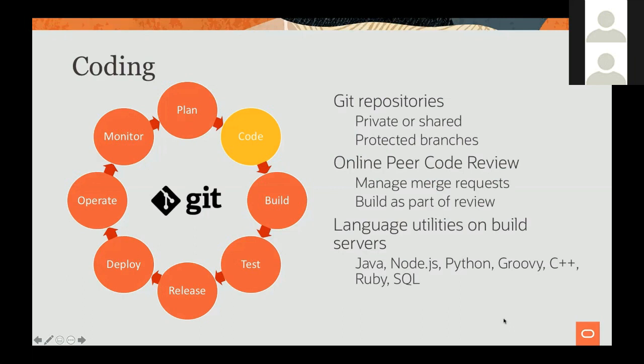Part of your merge process might be going through a peer code review process, which is another thing we offer inside Developer Cloud Service. It allows team members to review the code changes that other team members made, give feedback on the code, and help create better code as part of the development. We also have a bunch of language utilities on the build servers to help you take your code, compile it, and deliver it.